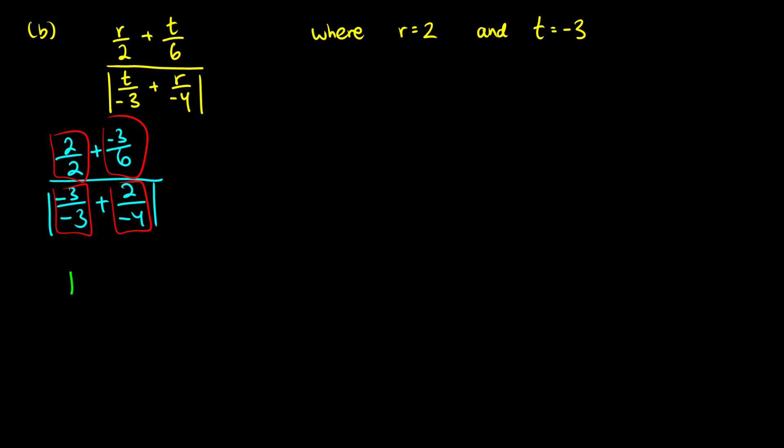So 2 over 2 is 1. Then we're going to add negative 3 over 6. We can divide the top and bottom here by 3 to simplify this. And we're going to get negative 1 half. And this is going to be divided by the absolute value of negative 3 over negative 3. So that's going to be 1. And we're going to add 2 over negative 4. And that's going to be the same thing also as negative 1 half.